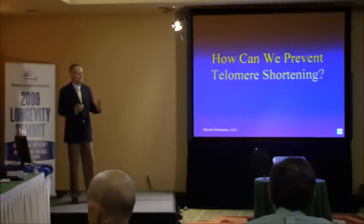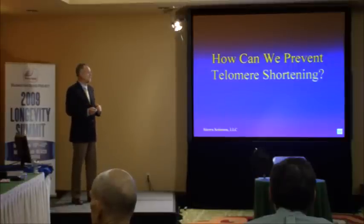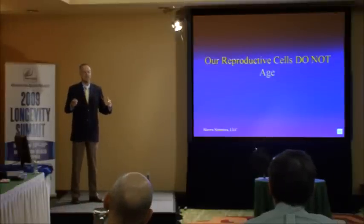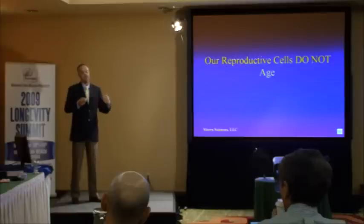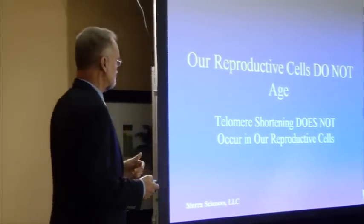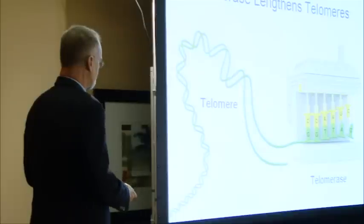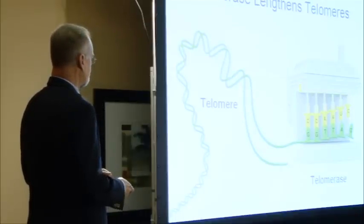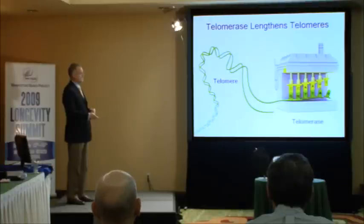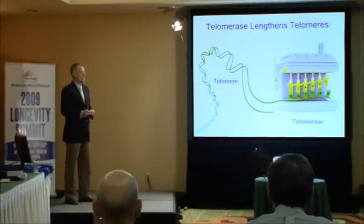How can we prevent telomere shortening? This is the thing you can't do right now, but hopefully in the future — with one exception. Our reproductive cells do not age. We know this because if all of our cells aged, then our children should be born as old as we are — but they're born younger. That means our reproductive cells aren't aging, and telomere shortening doesn't occur in them. This is due to the presence of an enzyme called telomerase, which was discovered at Geron Corporation. Telomerase acts on the DNA molecule at the telomere and lengthens it. That's what telomerase does, and it's found only in our reproductive cells.